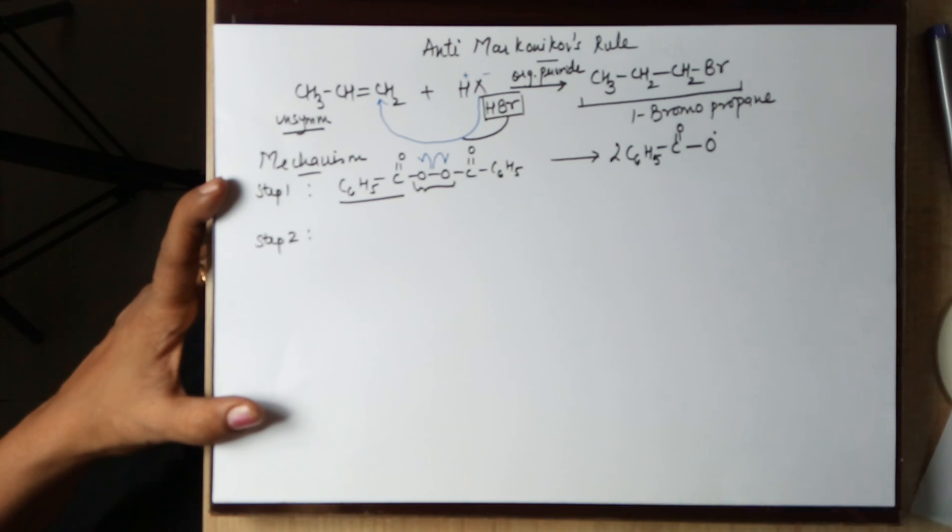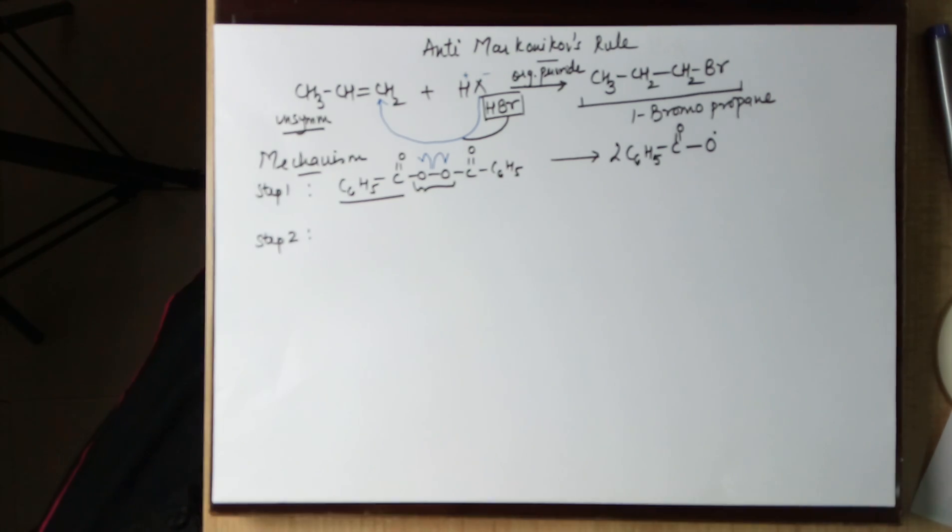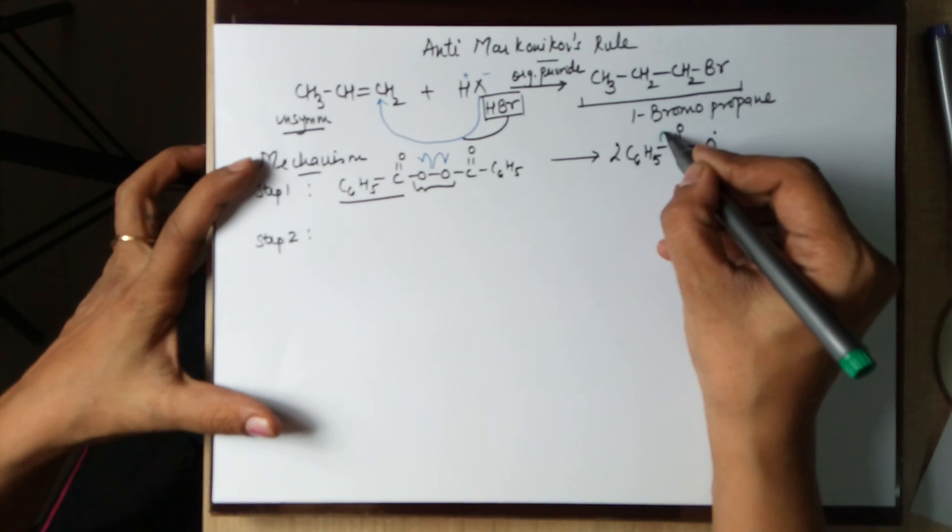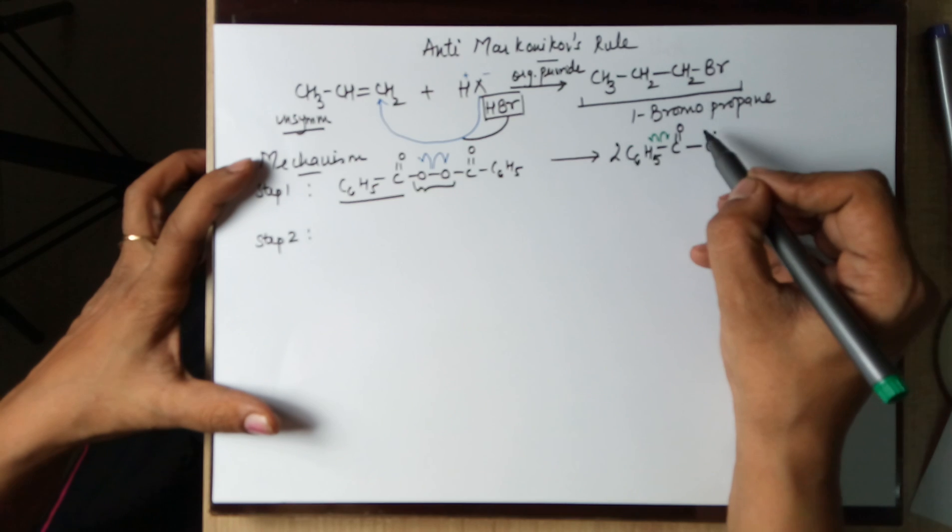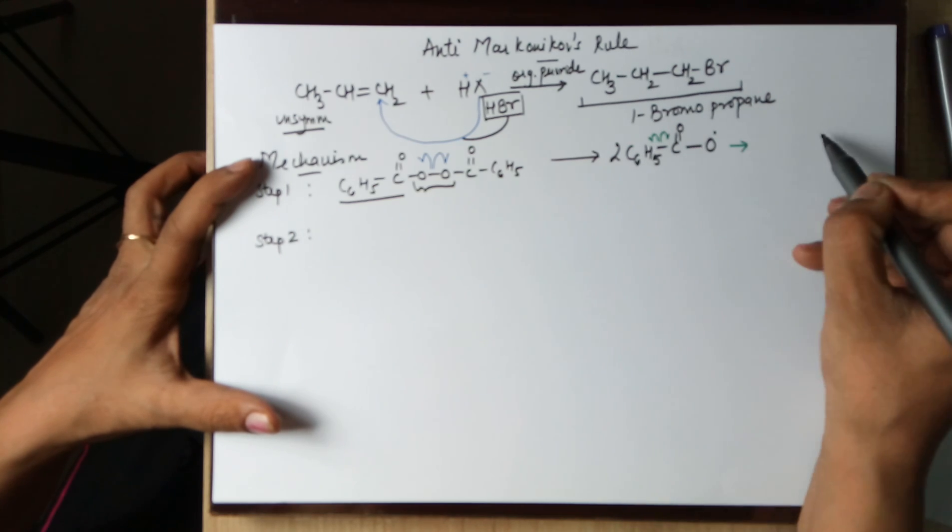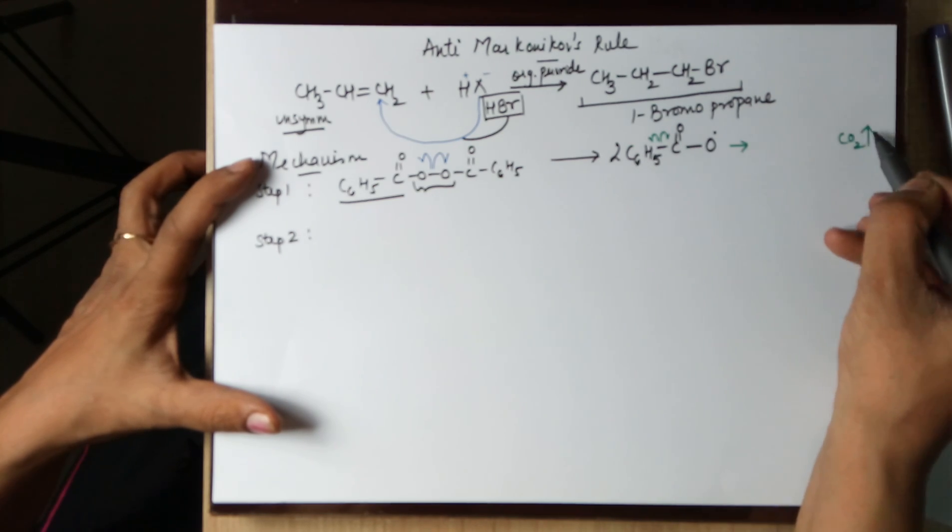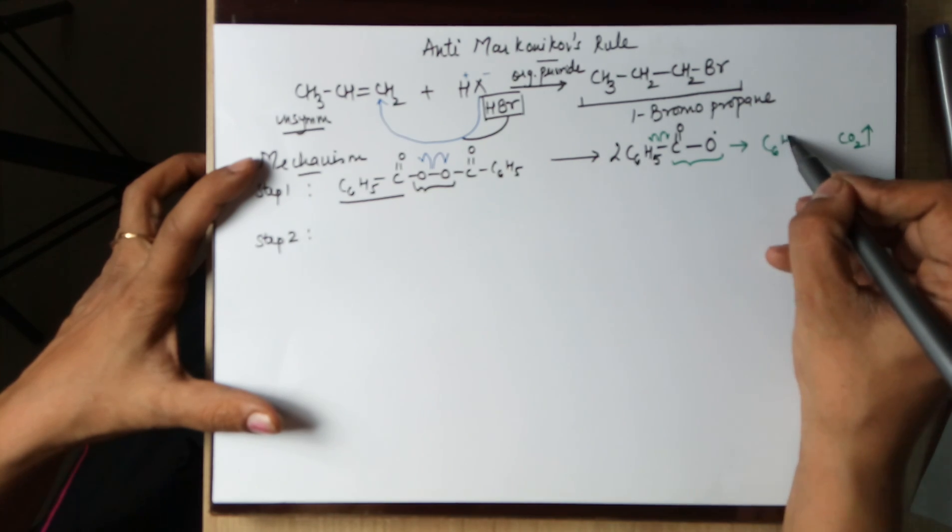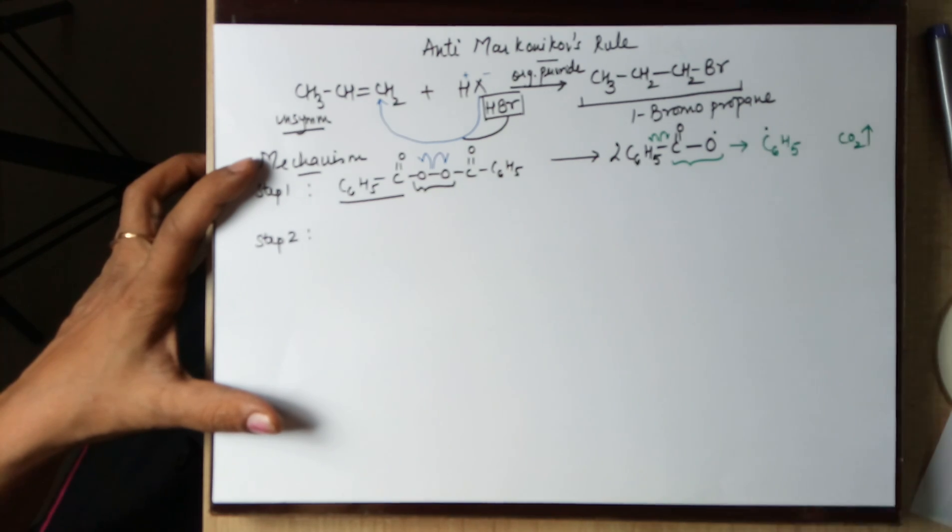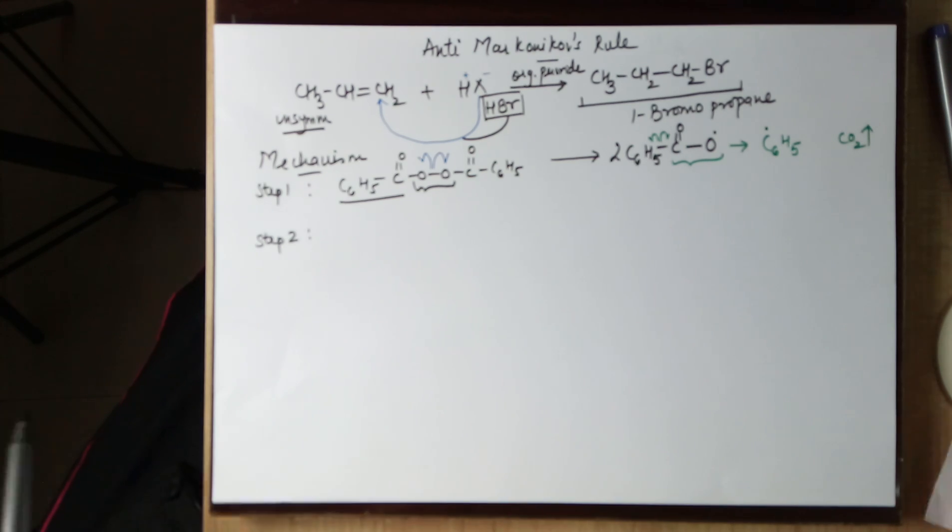This identity further cleaves in a way that you end up in the release of a carbon dioxide molecule. This bond cleaves here again homolytically and you end up in a CO2 liberated, this part. And you are left with a C6H5 free radical, the phenyl free radical.